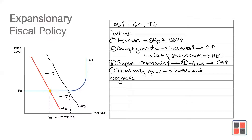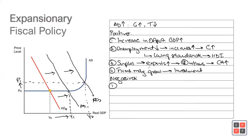What are the negatives of such a policy? If the government is trying to increase aggregate demand through expansionary fiscal policy, the first negative is that in the long term, if aggregate demand keeps on increasing — as can be seen from AD1 to AD2 — not only will output increase, but you can see that price levels have also started to increase, from P0 to P1. This is known as inflation.